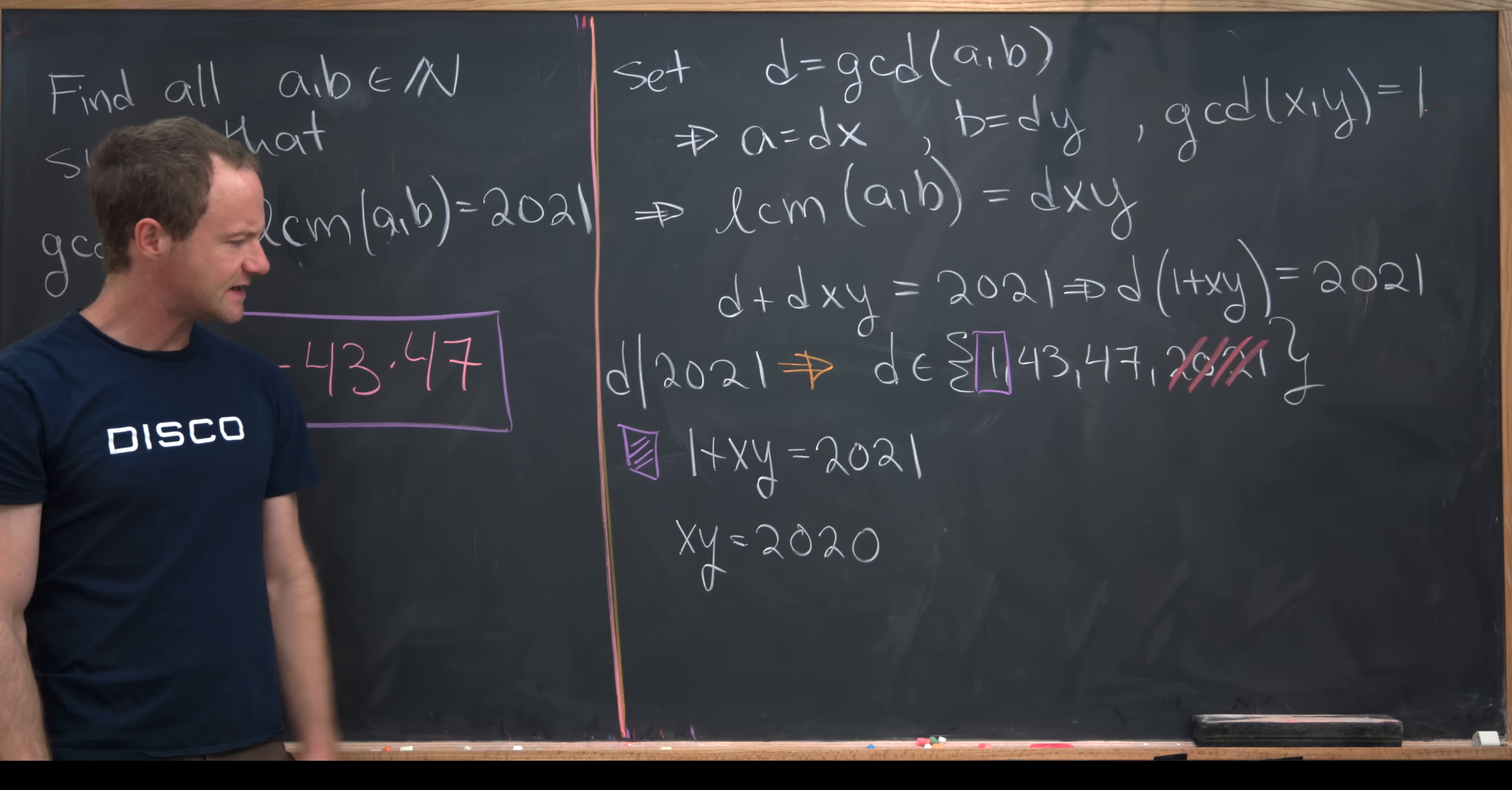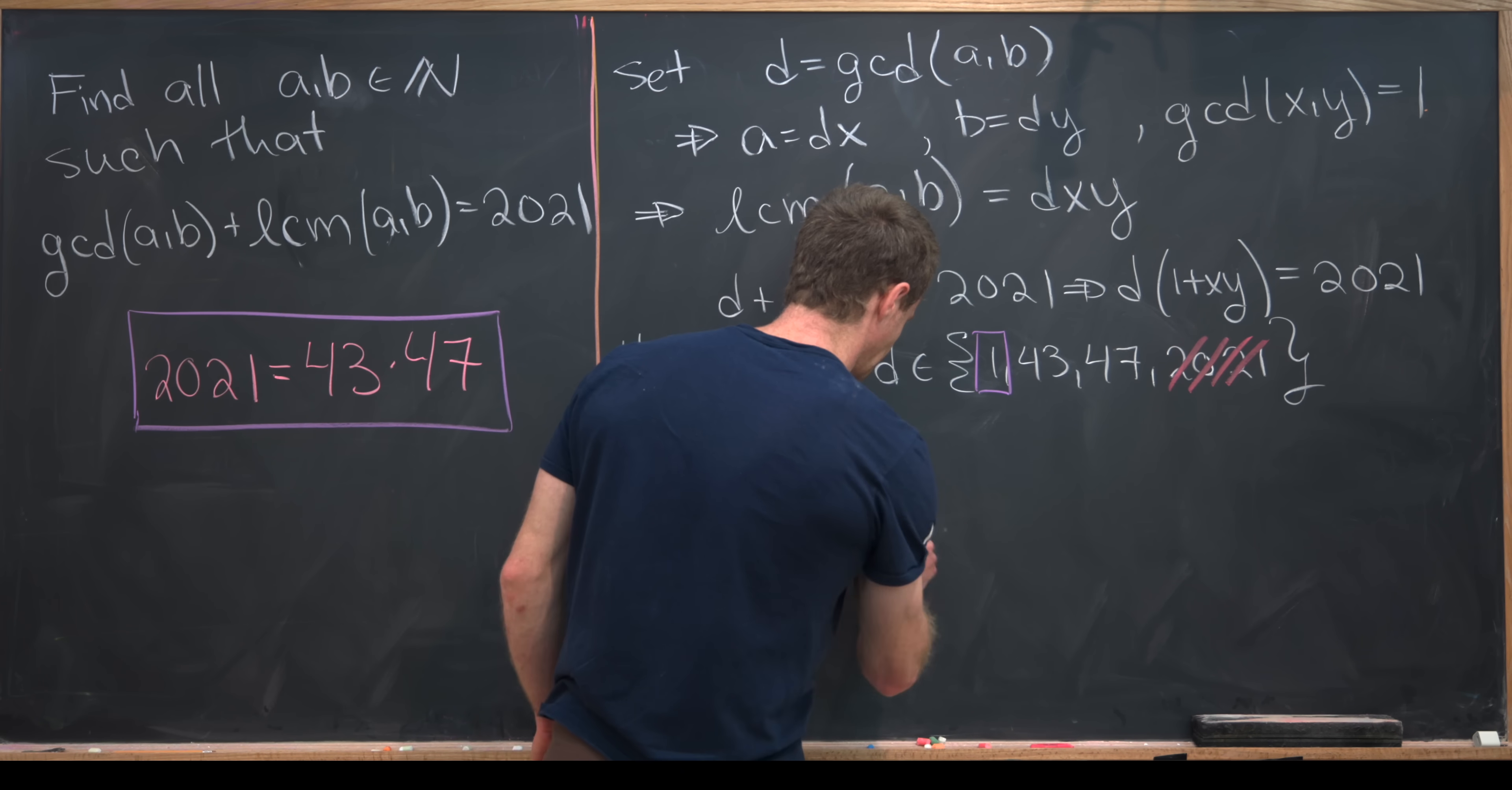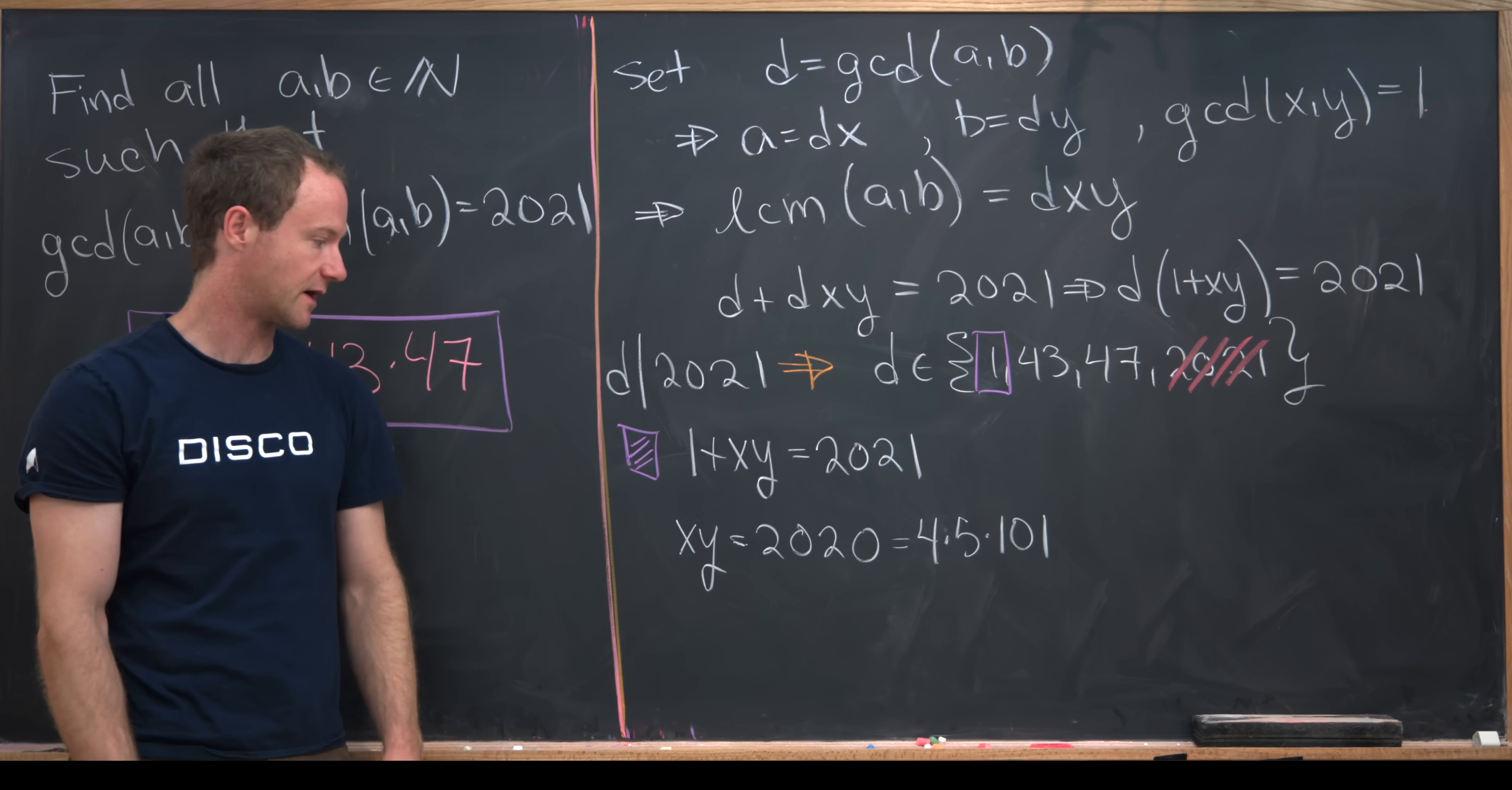Now we need to be able to factor 2020 into coprime integers. What I mean by coprime is that their GCD is 1. That's because of this thing up here. Let's notice that 2020 is in fact 4 times 5 times 101. So that's 2020 written as a product of powers of primes.